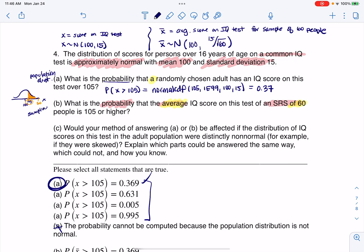And this one down here, B, is dealing with a sampling distribution, because quite frankly, it has a sample in it. It has a sample of 60 people. So here, I want the probability now that X bar is greater than 105.